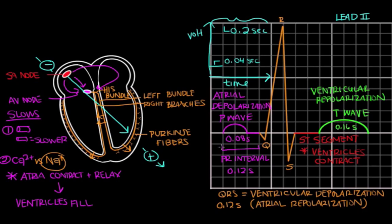You might ask why the PR interval is called the PR interval when it goes from the P to the Q wave. The PR interval is from the beginning of atrial depolarization up until the start of ventricular depolarization. Sometimes there's no Q wave on the EKG — it's just not found — so the start of ventricular depolarization is actually the start of the R wave, which is why it's called the PR interval. If there is a Q wave, you could call it the PQ interval, but to generalize, we call it the PR interval for the times the Q wave is absent.